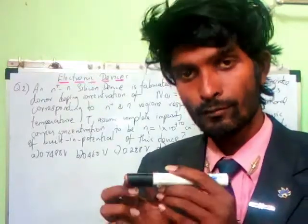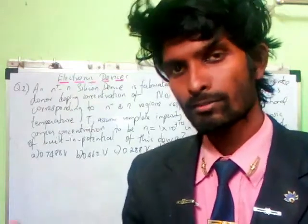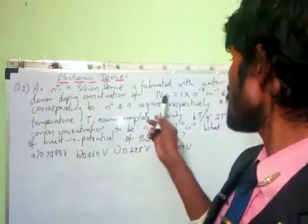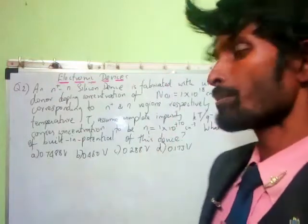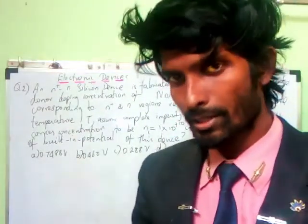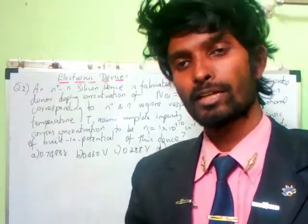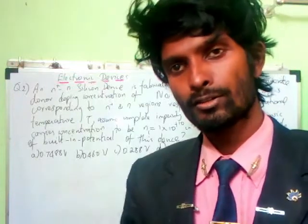And for the n-minus region, a concentration of n_d2. They give the value in terms of per meter. Look at over here: 1 into 10 power minus 18 centimeter per centimeter cube, and for n_d2 they give some other things.